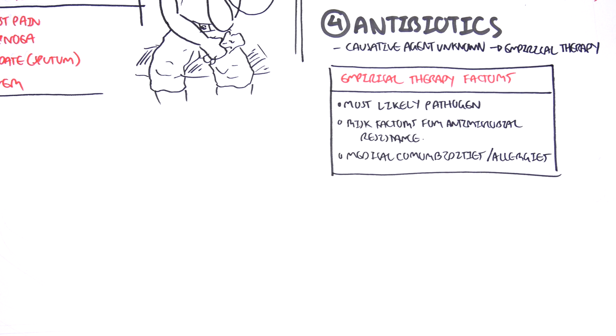So the use of empirical therapy is different for nosocomial, for community acquired, for aspiration, for all the different types of pneumonia, it's usually different. Some overlap.